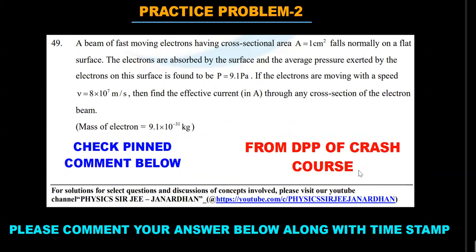Practice problem two I have taken from the DPP of our crash course. At this point of the video we are going through current electricity and capacitors dielectric week in the crash course. I have picked up a problem from the DPP - again a beam of fast moving electrons, and this time we are talking about a pressure versus the current relation. Different mechanical and physical quantities that you can calculate for the same situation is highlighted through this problem. If you want to see many more such problems and have a look at our crash courses, I have put the information about the app of Physics Surgery and rest of the things in the pinned comment below. Check it out, or if you want to try this particular problem in YouTube itself, please comment your answer below along with the time stamp. I'll respond whether you have done it correctly or not.